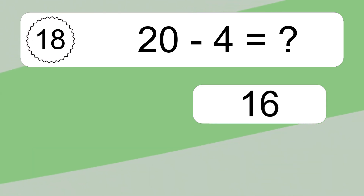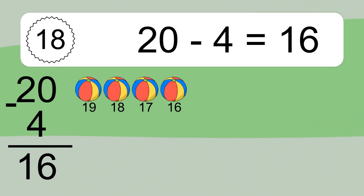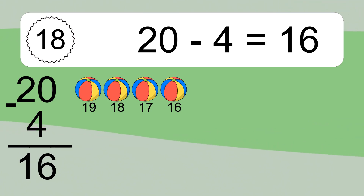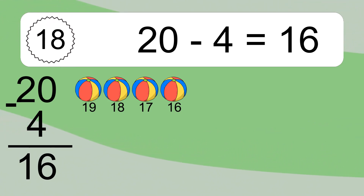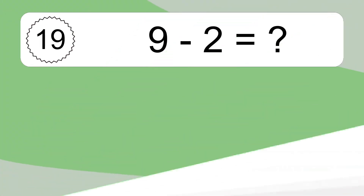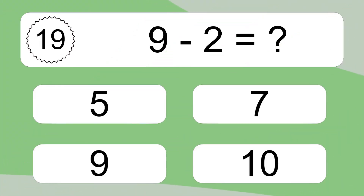20 minus 4 equals 16. Let's count it: 19, 18, 17, 16. 9 minus 2 equals what?